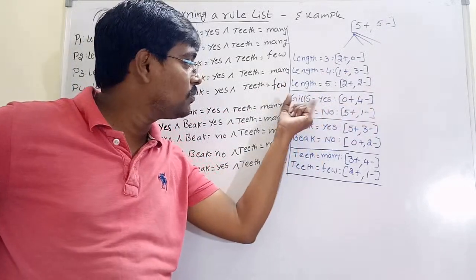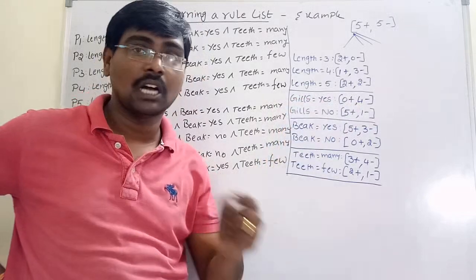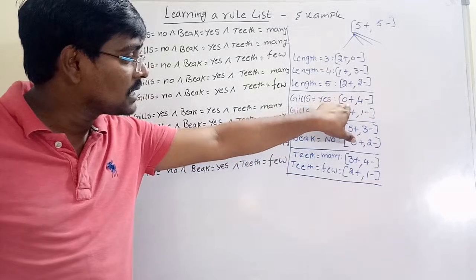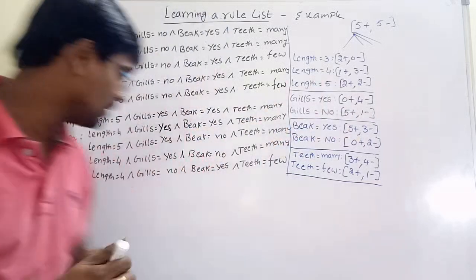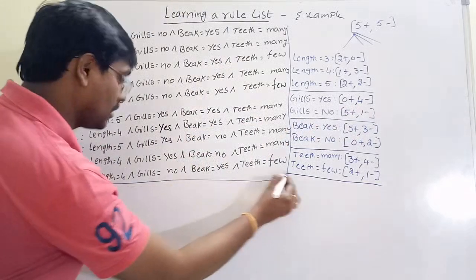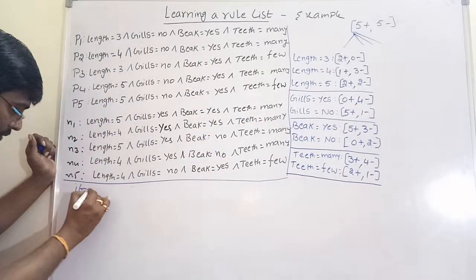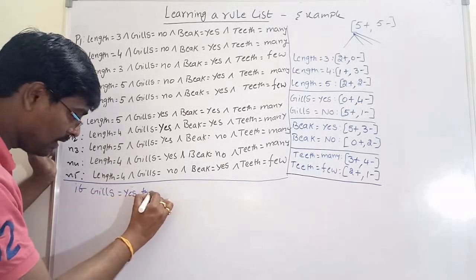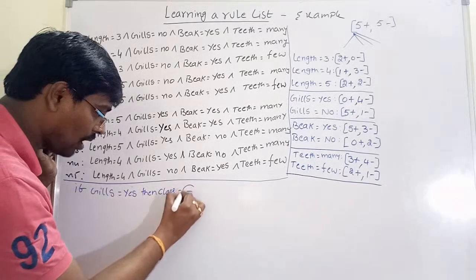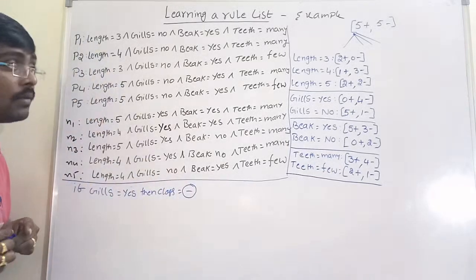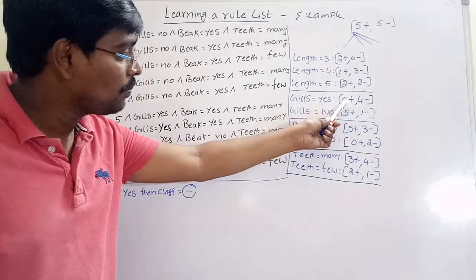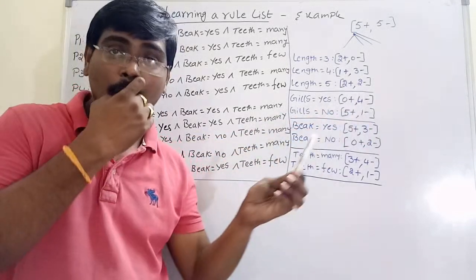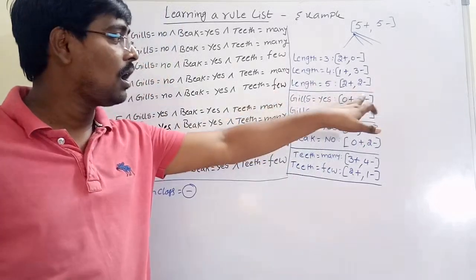Whenever gills is equal to yes, the class is negative because it contains zero positives and four negatives. So our first rule is: if gills is equal to yes, then class is equal to negative. Based on purity — zero positives — the majority class is negative.